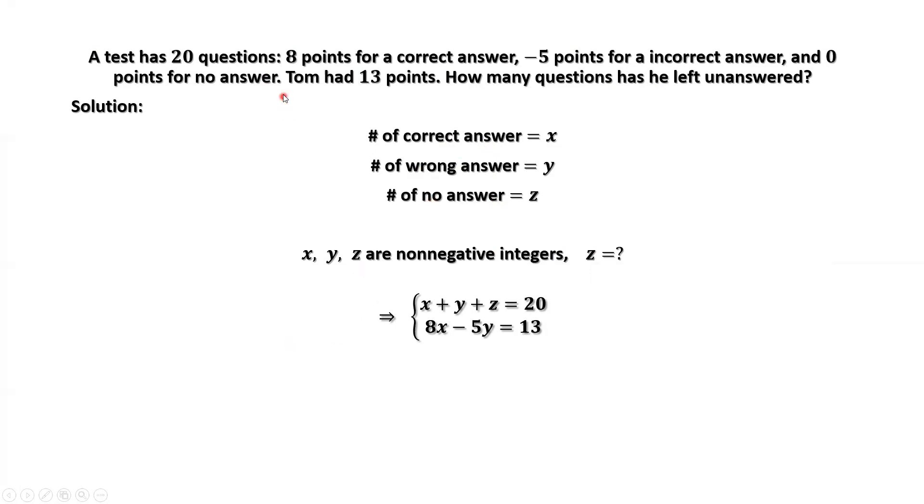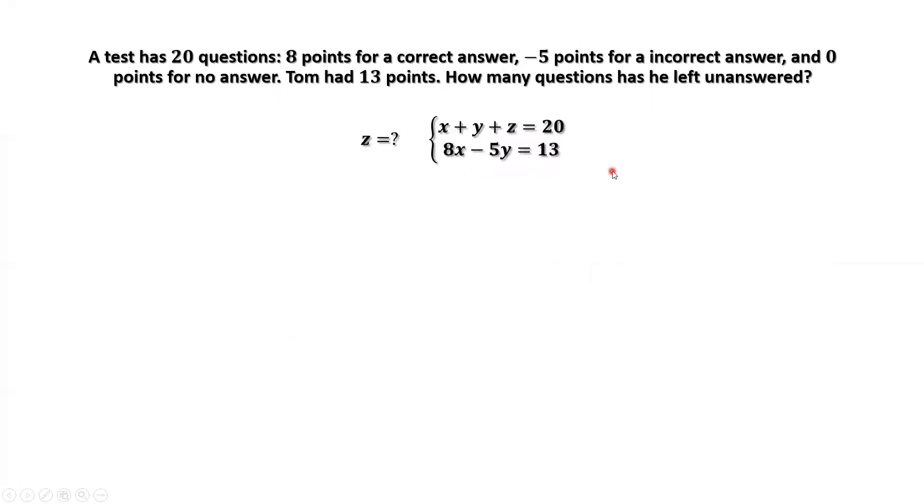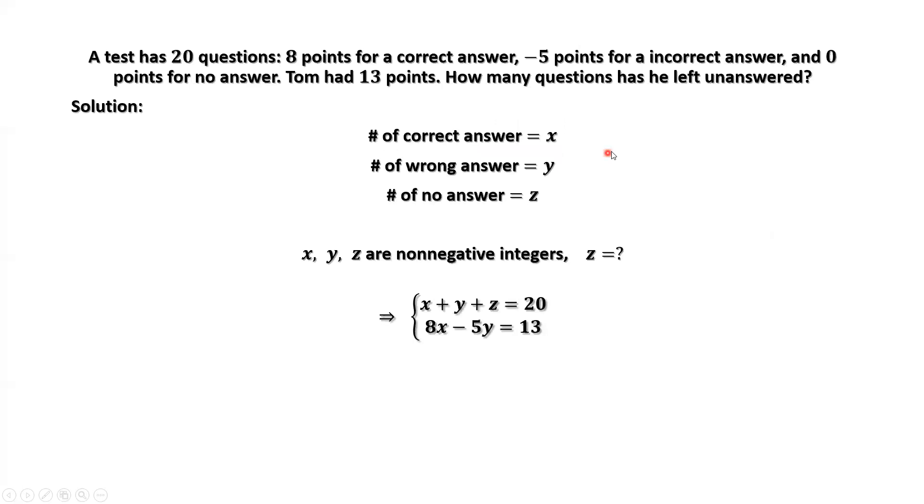Based on the grading policy, eight points for correct answer, that means 8 times X. For wrong answer, negative five points for each question. Zero for no answer. Tom got 13 points. So we have 8X minus 5Y equals 13.